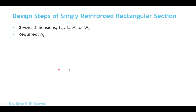Now let's go through the clear design steps for a singly reinforced rectangular section. What is given: dimensions of the cross section (or you can assume dimensions from code guidance), Fcubd, and the ultimate moment M ultimate — which may be calculated from structural analysis if a loading problem is given. The required output is the area of steel.